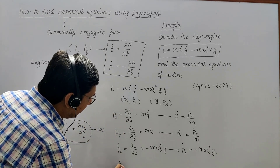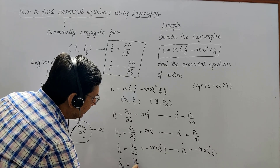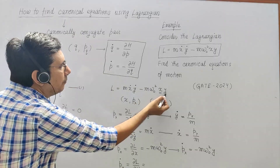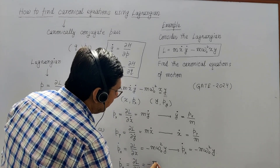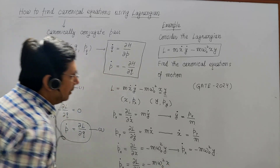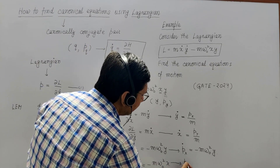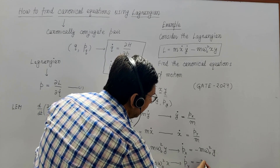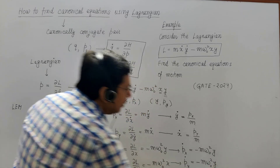For the fourth equation: ṗy = ∂L/∂y. y appears in -mω₀²xy, so taking the partial derivative with respect to y gives ṗy = -mω₀²x. This is the fourth canonical equation.